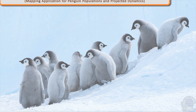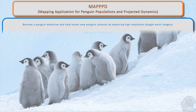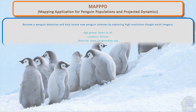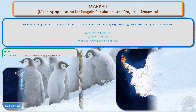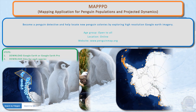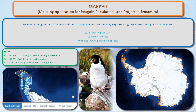Mapped is a mapping application for penguin populations and projected dynamics. Become a penguin detective and help locate new penguin colonies from home by exploring high-resolution Google Earth imagery. You will need to download Google Earth and the necessary files from the website to start locating the penguin colonies.